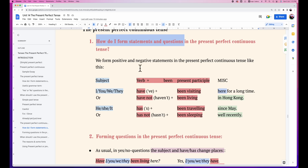Now we form positive and negative statements. Positive - a sentence without n-o-t. Negative - a sentence with n-o-t. So for example, the subject I, you, they...